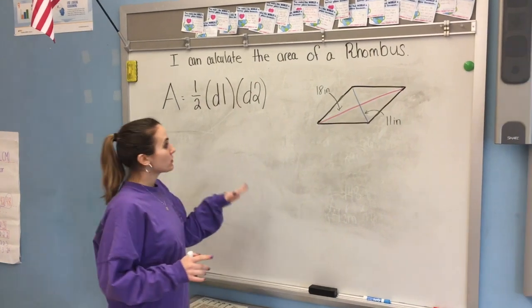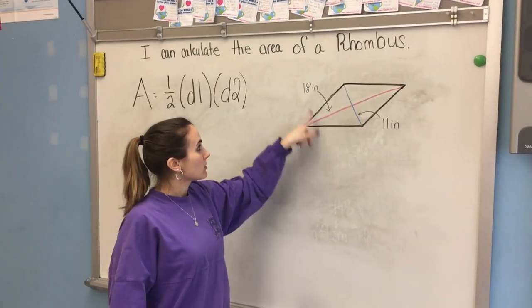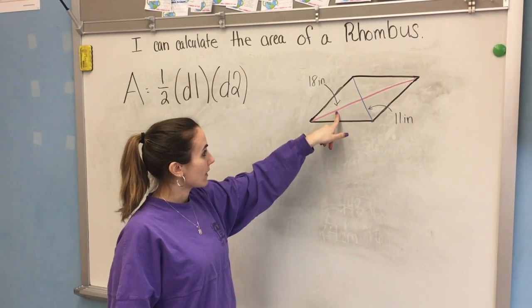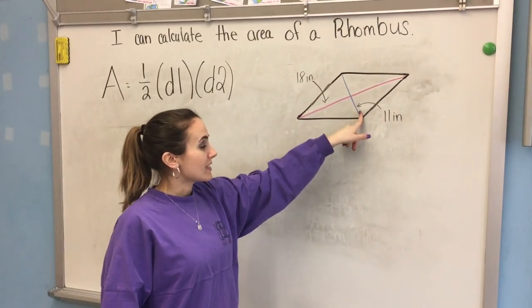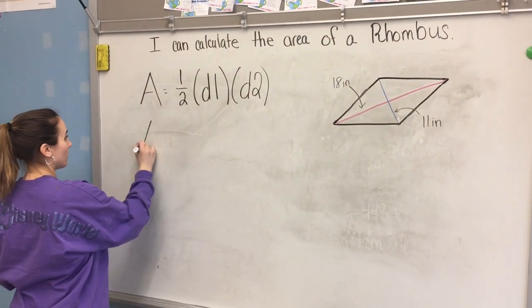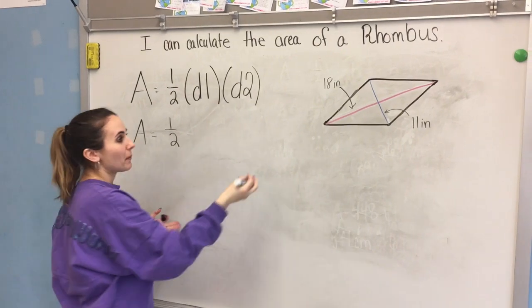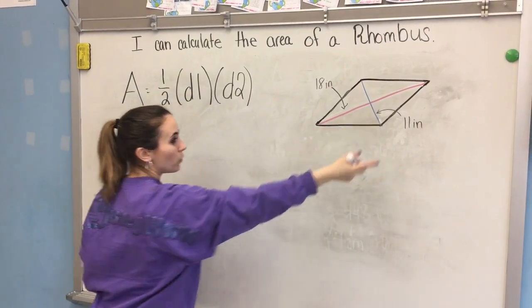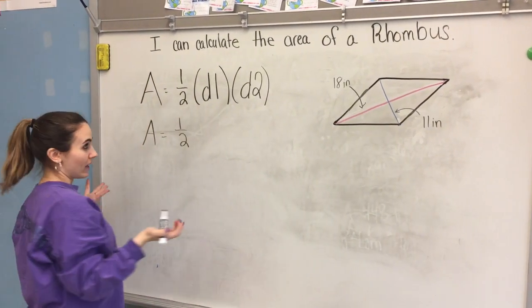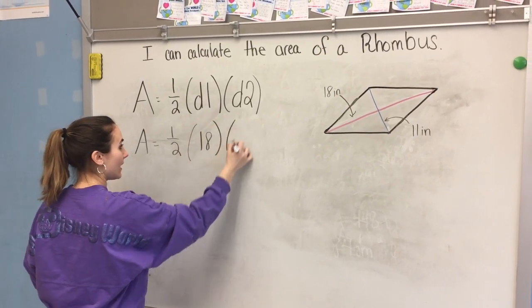So here we have our first rhombus with two different measurements for our diagonals. It says 18 inches for one diagonal and 11 inches for the other diagonal. So what I'm going to do is I'm going to plug it straight into my formula. Area equals one half. It doesn't really matter which diagonal you make diagonal one or two, because you're multiplying them together anyway.